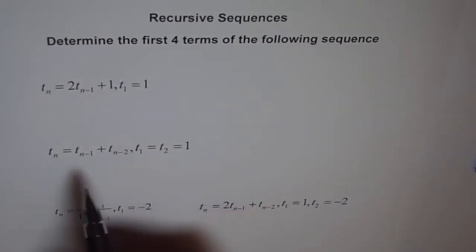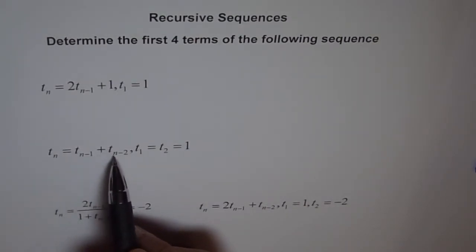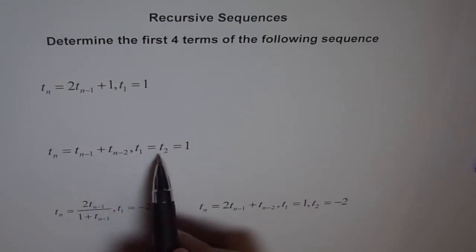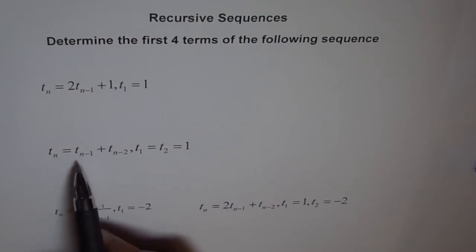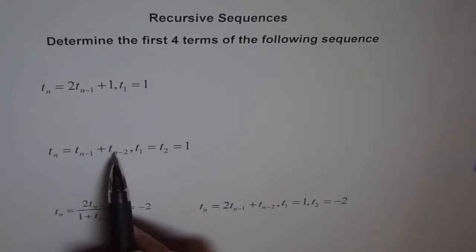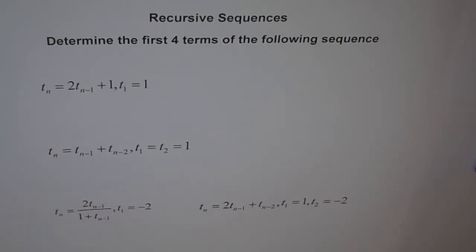If you see the second one, it says Tn equals Tn-1 plus Tn-2, where T1 and T2 are given to us and both are 1. Here we can find the value of the third term knowing the first two terms. Recursive formulas involve previous terms to get the value of a new term. Here we have some examples. I will do the first two for you. The last two I am leaving for you as an exercise.